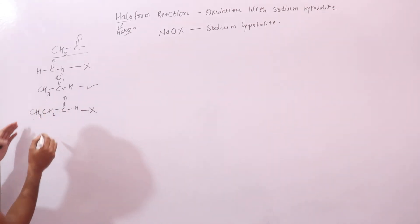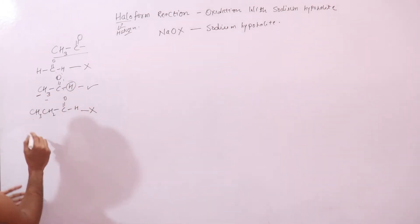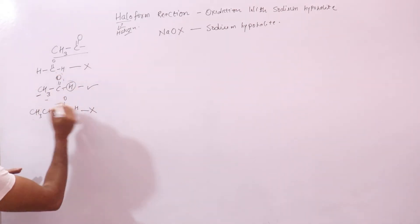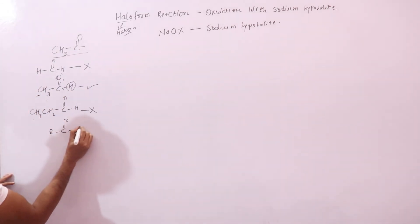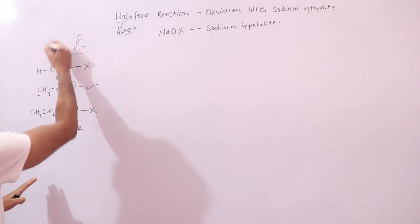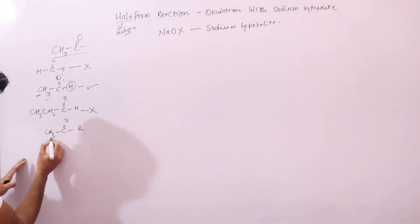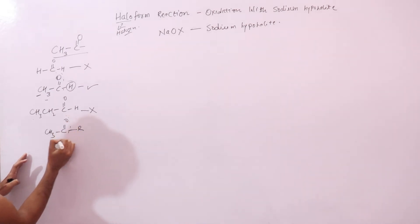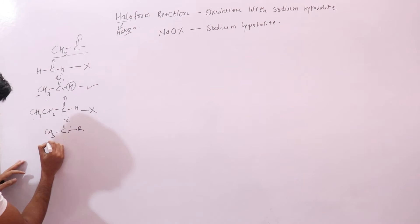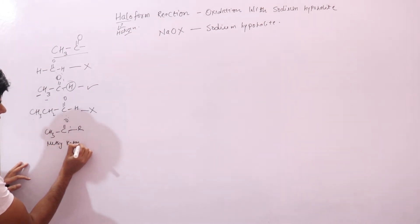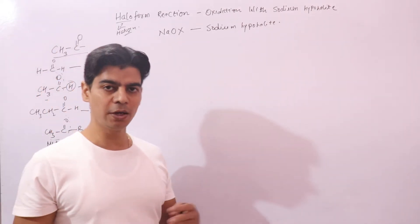Other aldehydes contain different alkyl groups, not the methyl group, and one group in an aldehyde is always hydrogen. So among all aldehydes, only acetaldehyde responds to the haloform reaction. Coming to ketones: a ketone has two alkyl groups, and if one of those alkyl groups is a methyl group, it always contains the CH3CO group. Such ketones are called methyl ketones, and they will always give the haloform reaction.